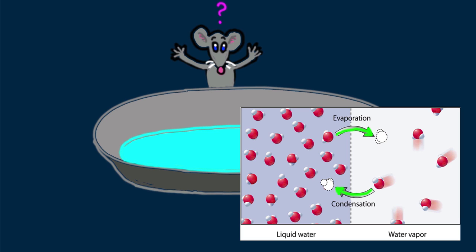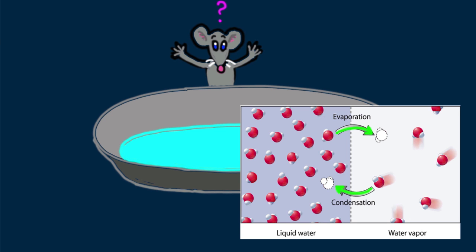When as many molecules evaporate as condense, no net evaporation or net condensation occurs. The two processes cancel each other. It's nice to think small when thinking physics.